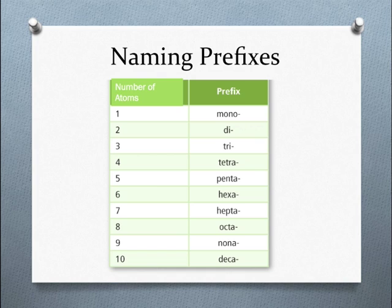Nine's prefix is nona. A decade is ten years, so use deca for ten. There are prefixes for quantities larger than ten, but we won't worry about those at this point in your chemical career.